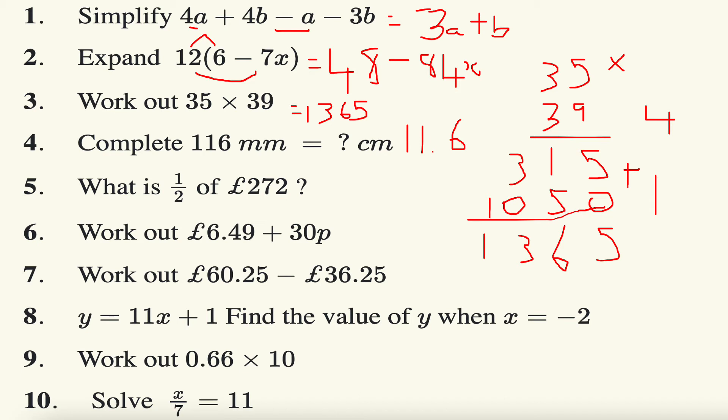Next question: work out a half of 272 pounds. Well, it's a fraction of an amount, so divide by the bottom times by the top. So 272 divided by two, so using bus stop. How many twos go into 2? It's going to be one remainder nothing. How many twos go into 7? It's three remainder one. Twos into 12 is going to be six, so the answer is 136 pounds.